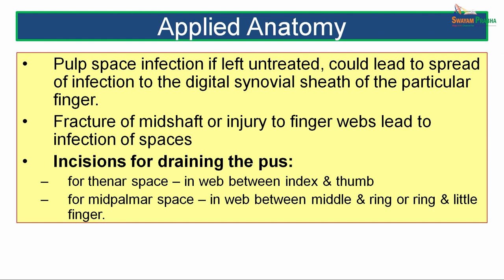Infections of these spaces are drained by taking incisions as follows: for the thenar space, the incision is taken in the web space between the index finger and the thumb to drain the pus. For the mid-palmar space, the incision is taken in the web space between the middle and ring finger or the ring finger and the little finger to drain the infectious pus.